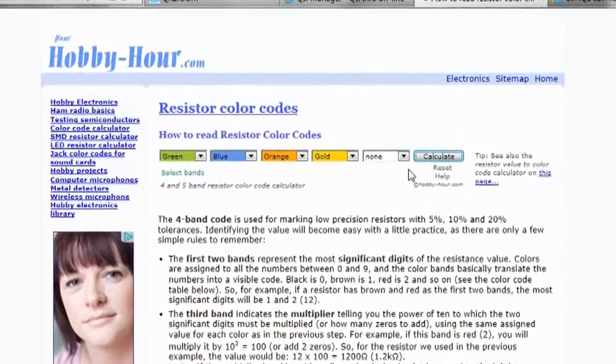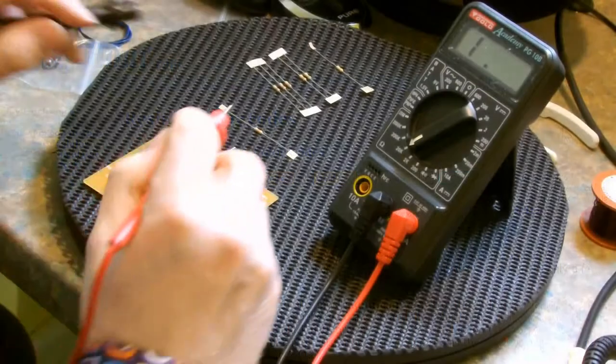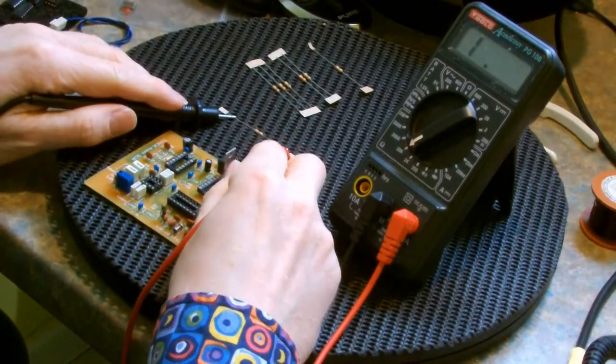But if, like me, you're getting a bit hard of seeing with small objects or colour blind and can't easily see the colour bands clearly, you can simply use a multimeter to measure individual components before installing them.